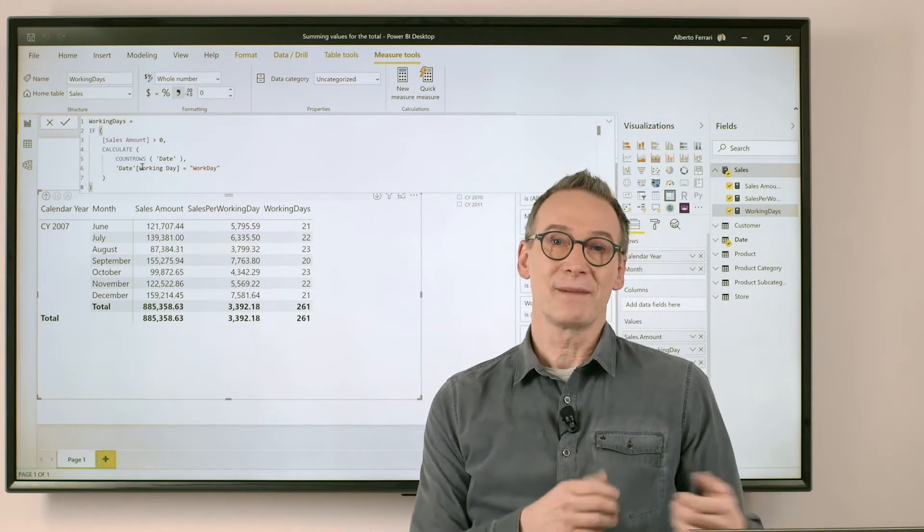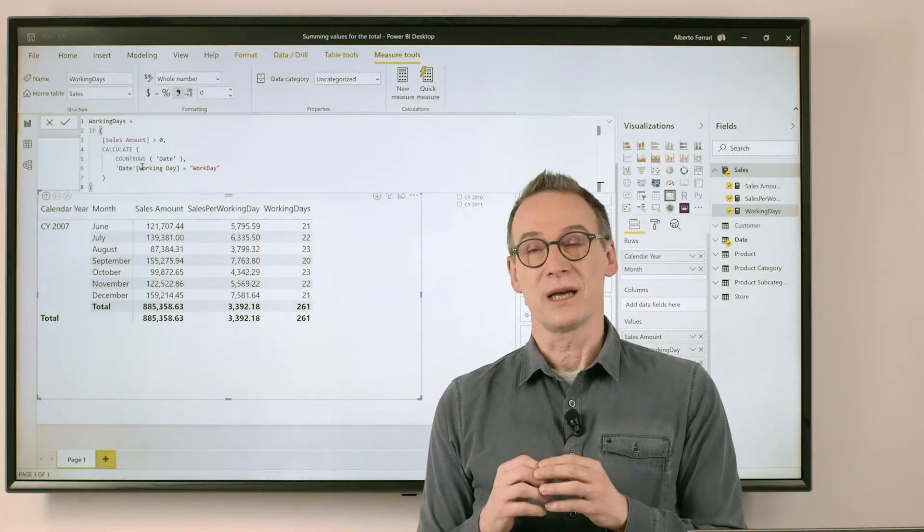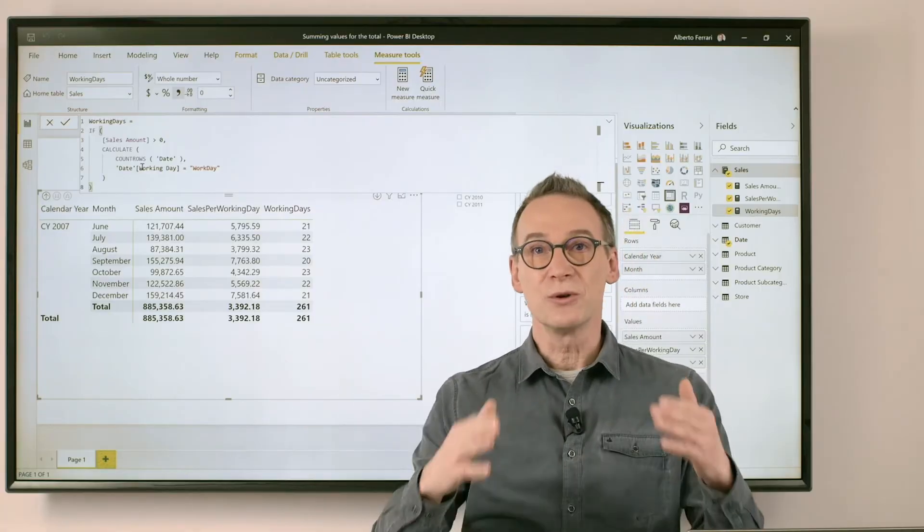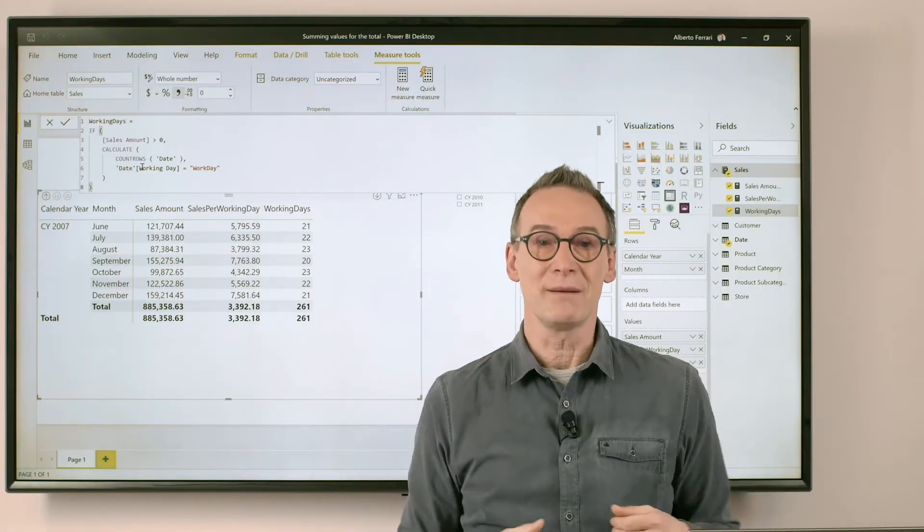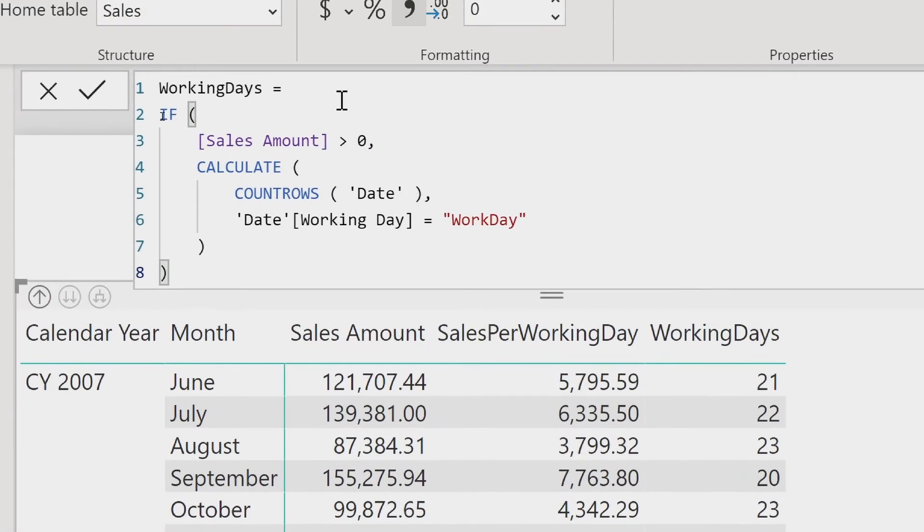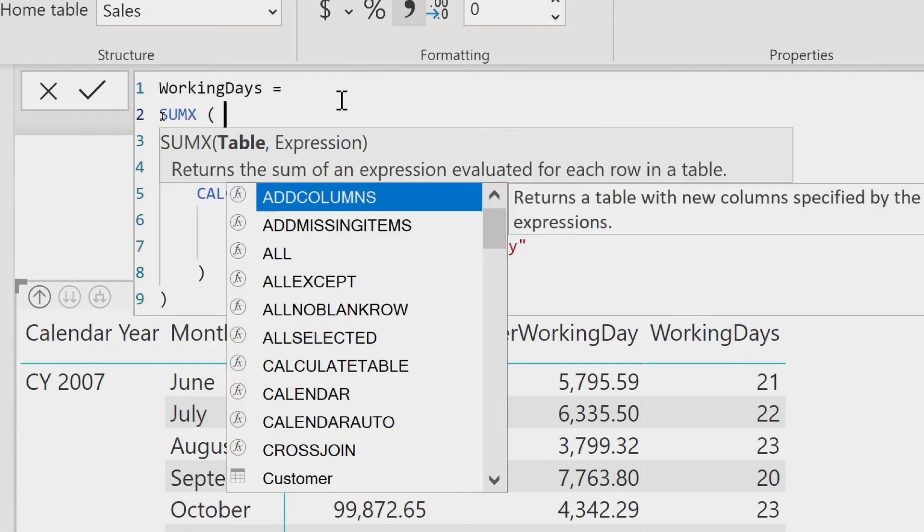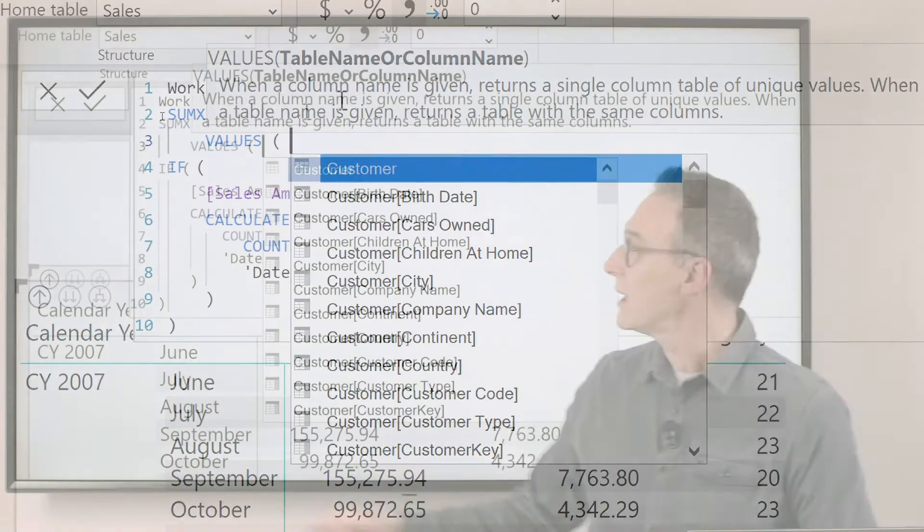So I need to replace my calculation, and instead of doing a simple formula like this, I want to iterate it month by month. So what I need to do is replace this working days with a different calculation, that is a SUMX, over the values of what?